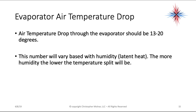Evaporator air temperature drop — your delta T temperature split — should be between 13 and 20 degrees. This number will vary based on humidity. The more humidity, the lower the temperature split will be, because a lot of the cooling power is going to remove that humidity from the system. Temperature drop through the evaporator: 13 to 20 degrees. For higher efficiency equipment you may see different numbers, but again, this is a rule of thumb.